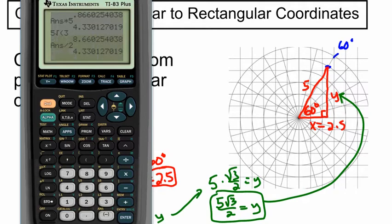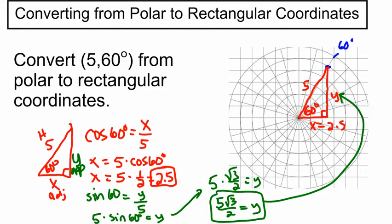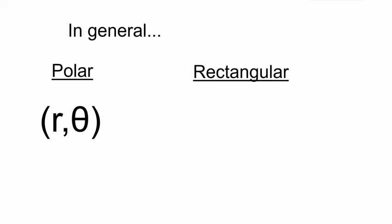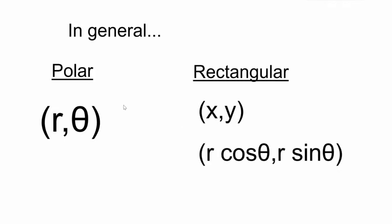So in general, if we're converting from polar to rectangular coordinates, if we are given a polar, an R theta, and we need to come up with an XY, well, what did we do? So our XY would be R times the cosine of theta, and then R times the sine of theta. So in general, to convert from polar to rectangular, if you're given an R theta, you can get your XY by doing R cosine theta and R sine theta.